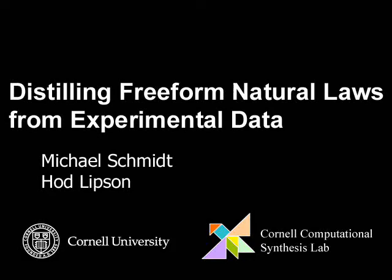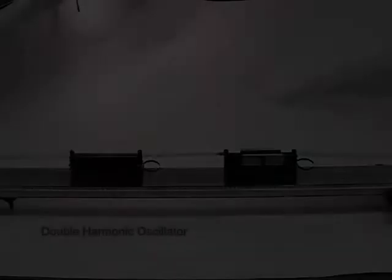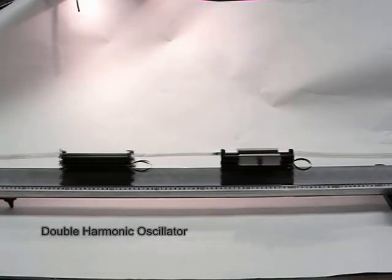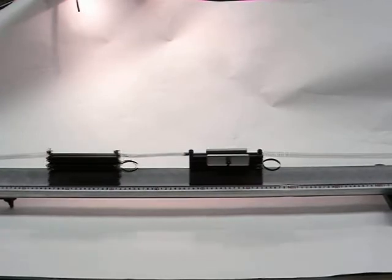This principle allows us to search the space of symbolic equations automatically to detect the underlying rules various systems obey based on experimentally collected data. Here we demonstrate two of the physical systems that we analyzed and visualize the equation search process.